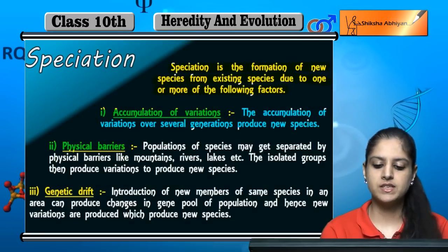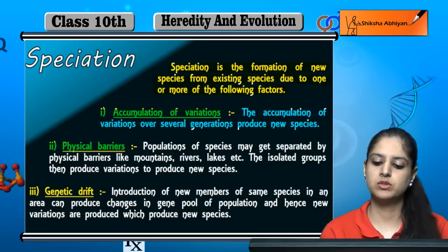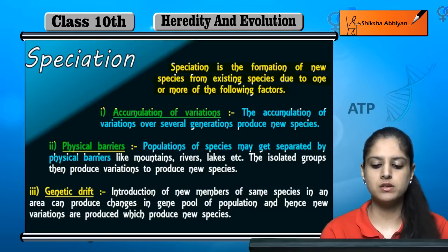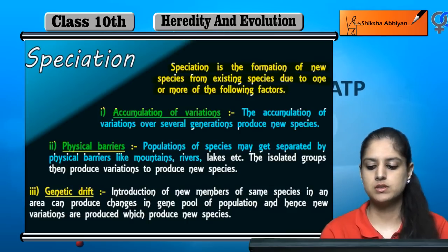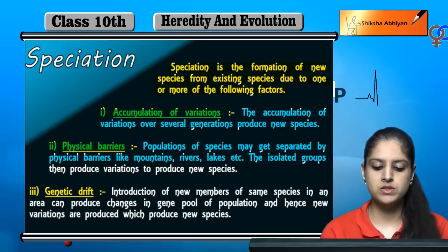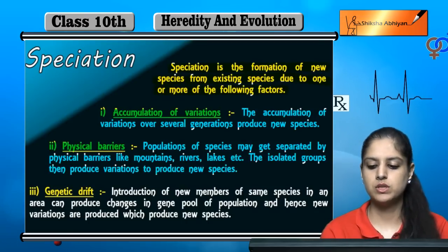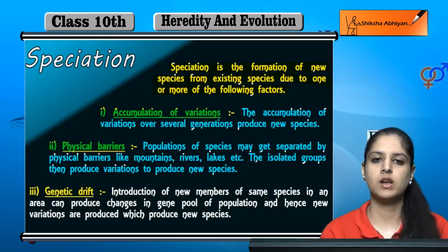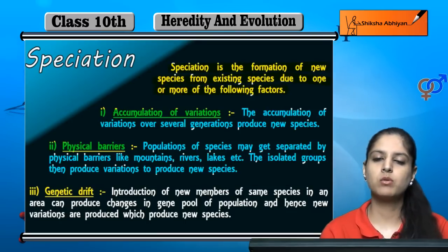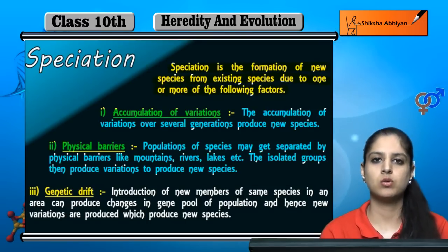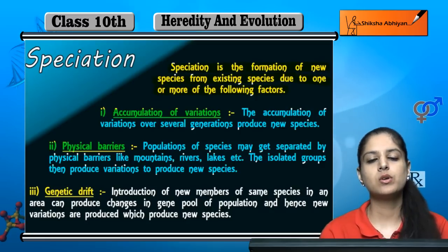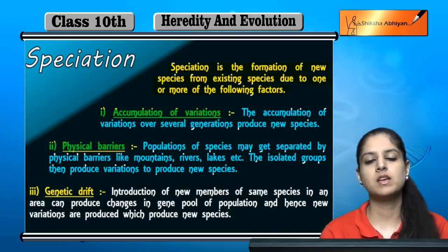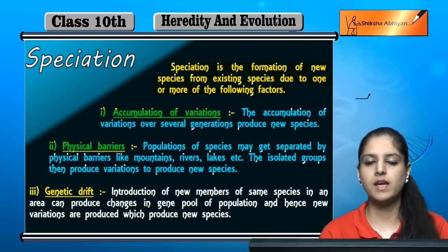The second factor is physical barriers such as mountains, rivers, and lakes. Isolated groups then produce variations to produce new species. A species can become different because of a mountain, a river, or a lake. They survive in different places where environmental factors can differ, leading to new variations and new species.